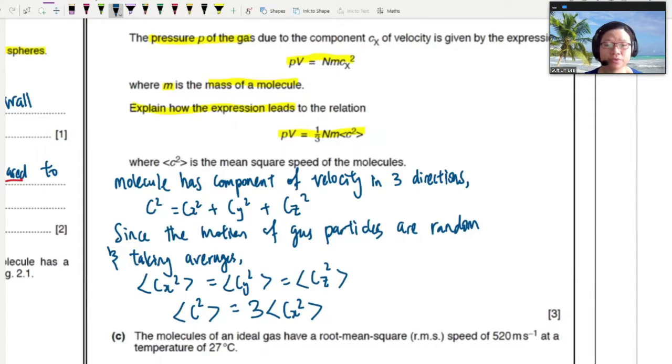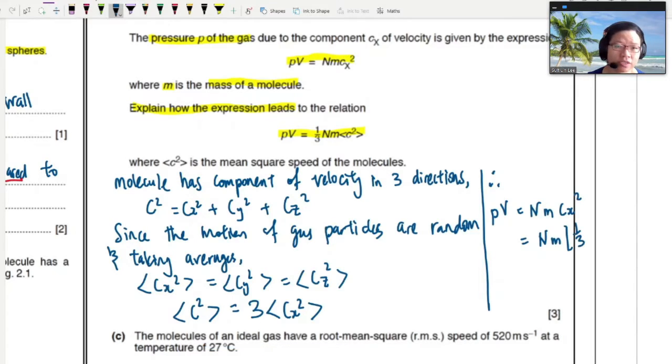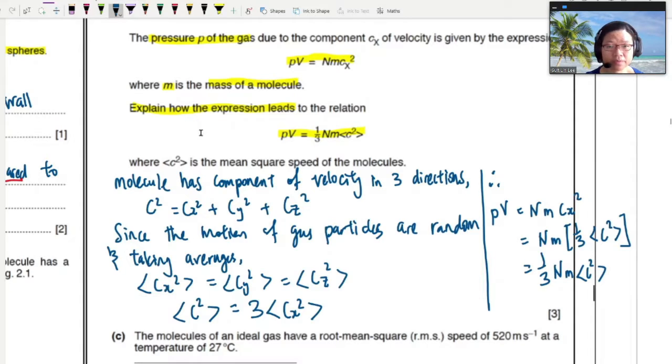So now we can substitute. We can look at the equation on top here and replace CX squared with this C. So that it may look like this. Hence, you can say PV is equal to NM CX squared. And because your CX squared is 1 third C, because this is for many particles, then you will again end up with this equation. So prove it. Three marks.